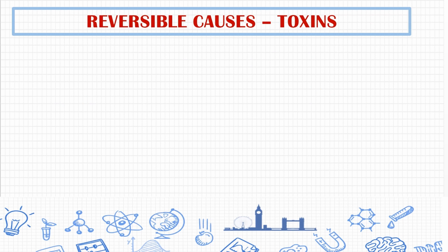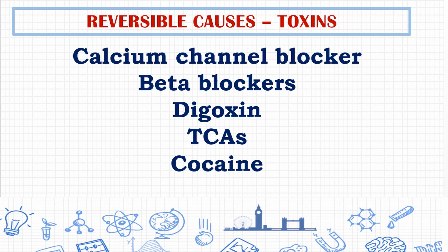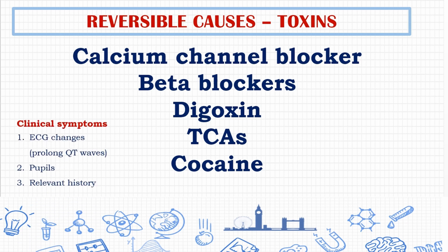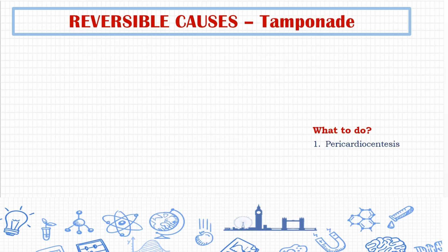Now let's look at the five T's. The first T is toxins. Toxins are caused by calcium channel blockers, beta blockers, digoxin, tricyclic antidepressants (TCA), and cocaine. Clinical findings include ECG changes with prolonged QT waves. Pupils and relevant drug history must be checked, and an appropriate antidote must be given if possible.